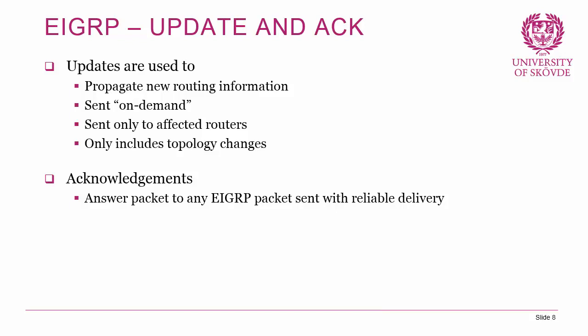Updates are used to propagate new routing information. As discussed, they are sent on-demand when something changes, only to affected routers — meaning they are triggered and bounded. They are also partial, including only topology changes rather than flooding the entire topology. Acknowledgements are sent in reply to any EIGRP packet that was sent using reliable delivery.